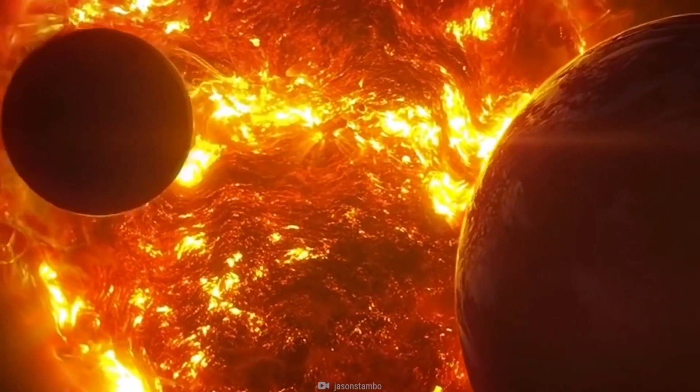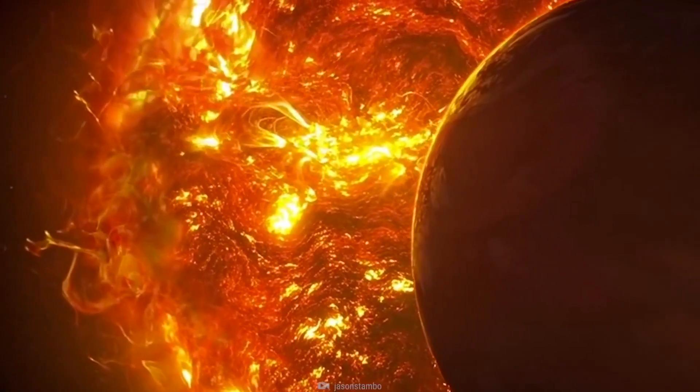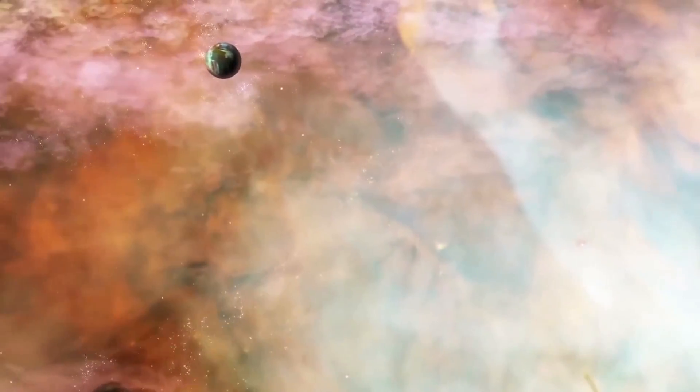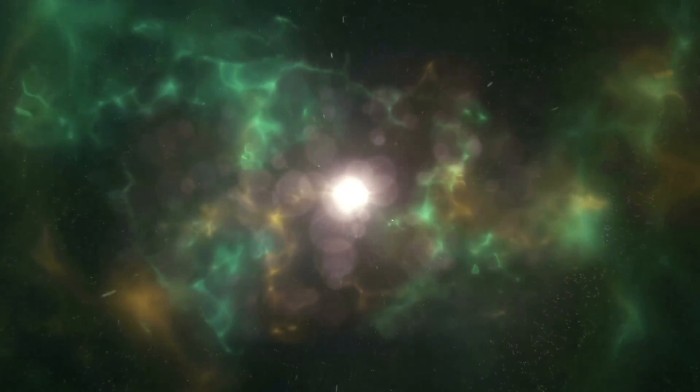But before it ever even runs out of hydrogen, the sun's high energy light will bombard our atmosphere and split apart the molecules and allow the water to escape as hydrogen and oxygen, eventually bleeding Earth dry of water. And it doesn't end there.